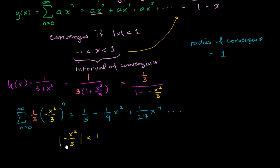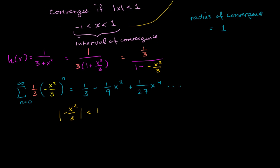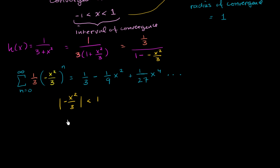The absolute value—this is going to be a negative number. This is the same thing as saying that the absolute value of x²/3 has to be less than 1.